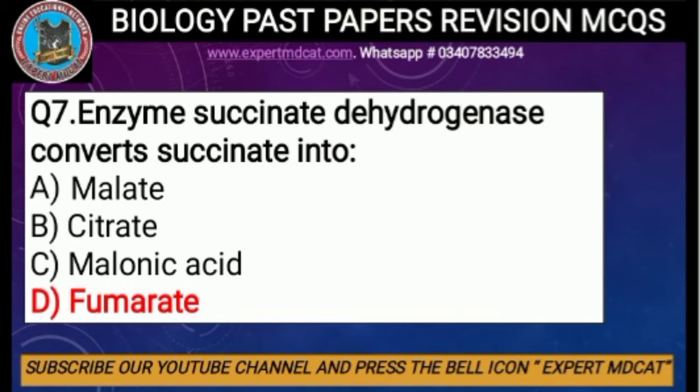Question number seven: enzyme succinate dehydrogenase converts succinate into what? The enzyme succinate dehydrogenase acts on succinic acid (C4H6O4) as a substrate and converts it into fumarate (C4H4O4). The correct option is D, fumarate.